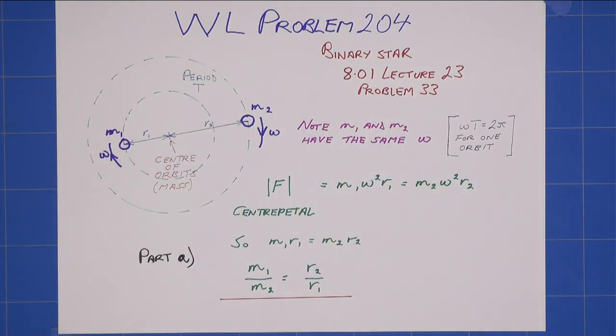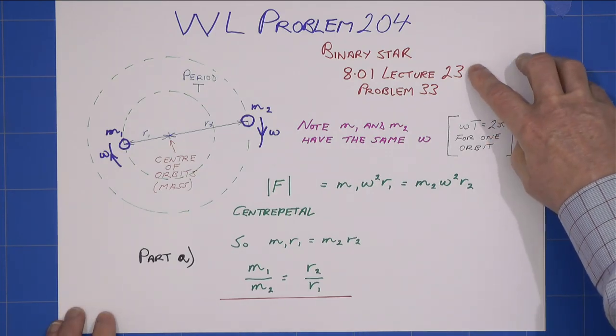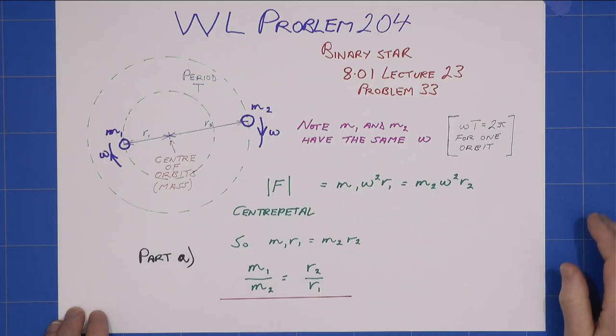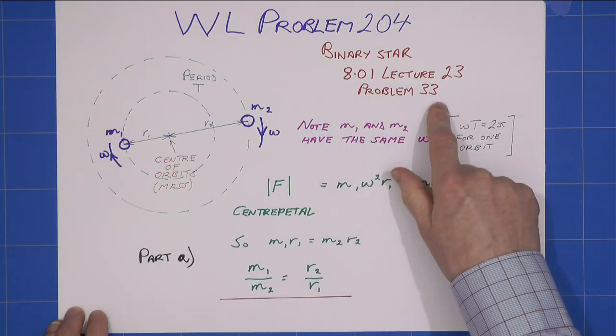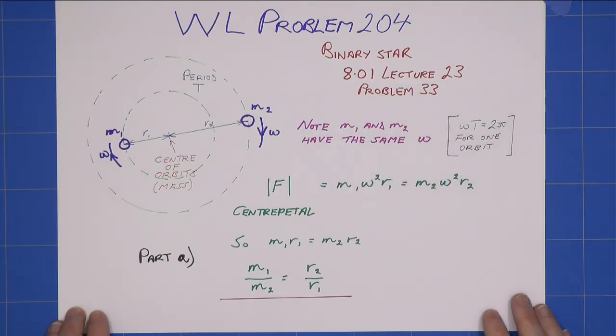If you are ready, I am ready. This is Keith's solution to Walter Lewin's problem 204, which concerns a binary star. I recommend his Lecture 23 of 801 and also one of his earlier problems, problem 33, which covered quite a similar situation.